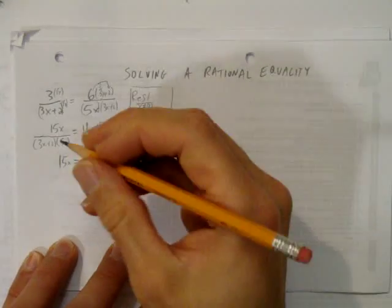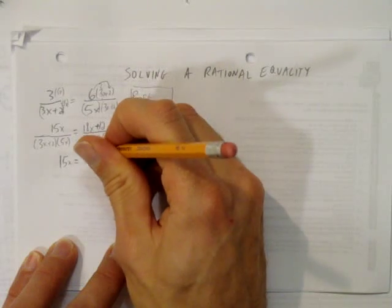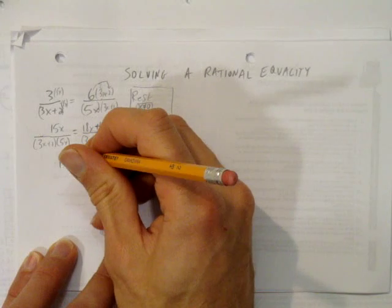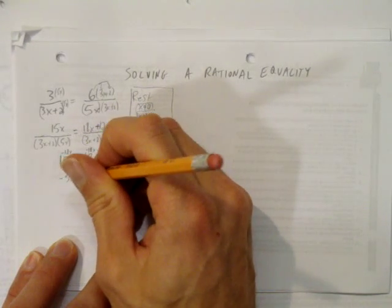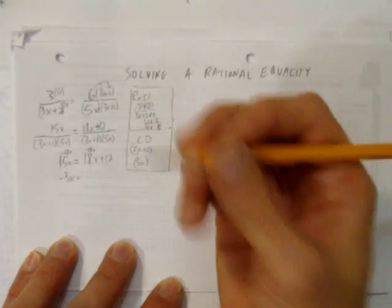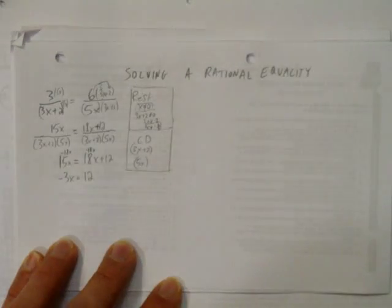Now it's just a question of getting x by itself. Let's take away 18x from both sides. And when we do that, we get 15x minus 18x is negative 3x. On the right-hand side, 18x minus 18x cancels out, which is what we wanted. And we're left with negative 3x equals 12.